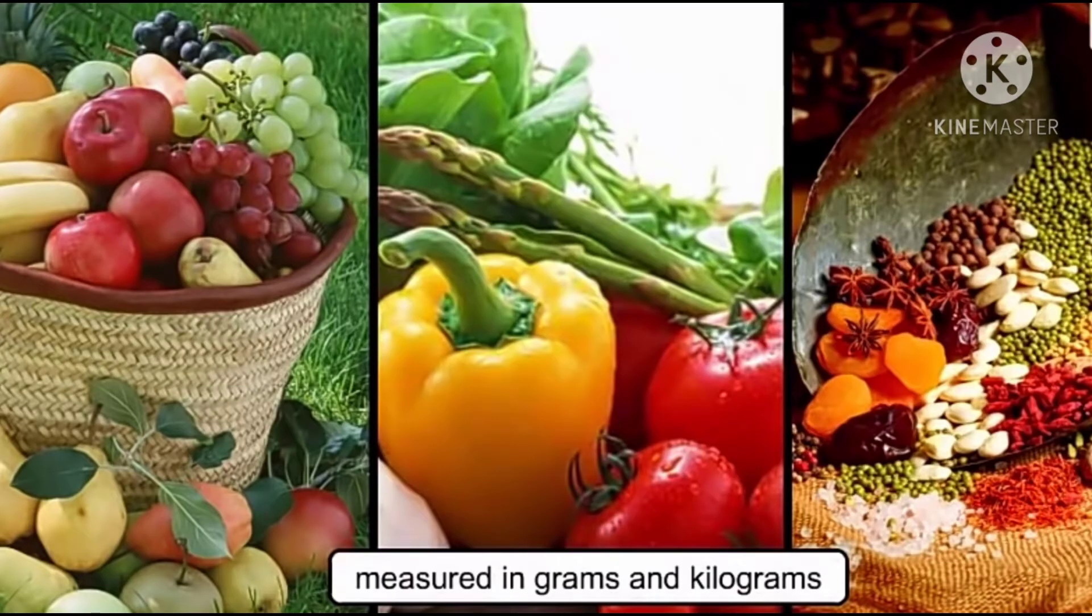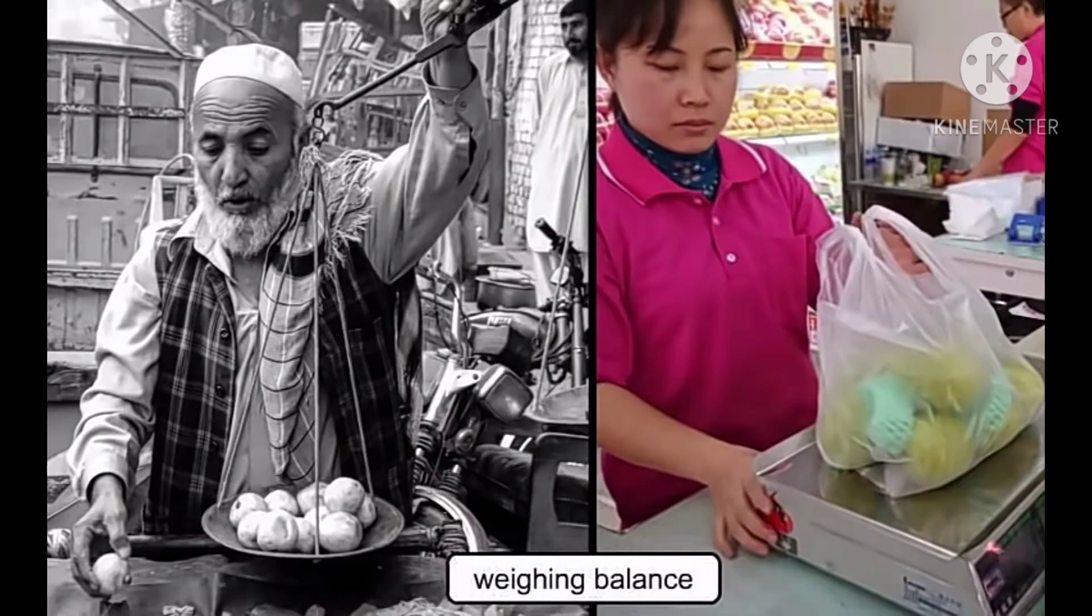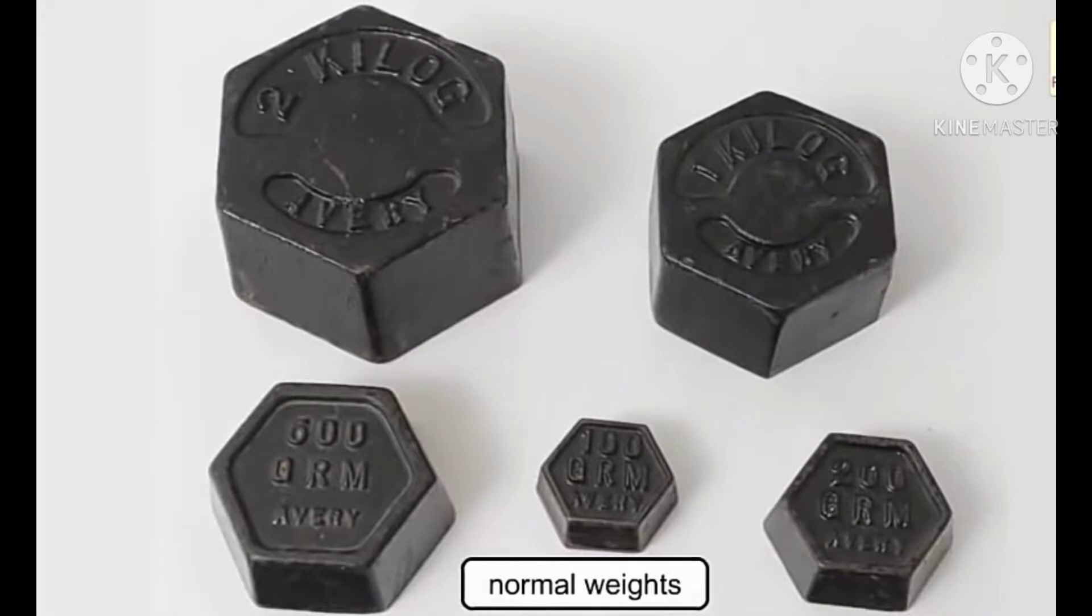We measure fruits, vegetables, and pulses in grams and kilograms. To measure weight we use weighing balance and digital weighing machine. Here you can see the normal weights which are used to weigh things in weighing balance.